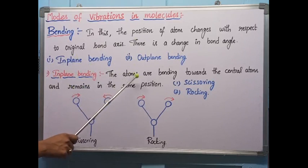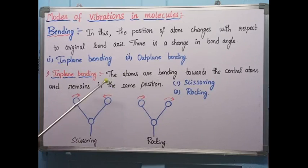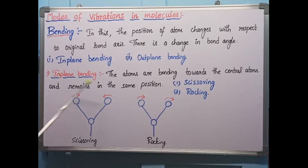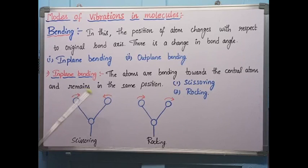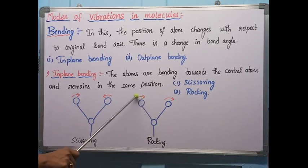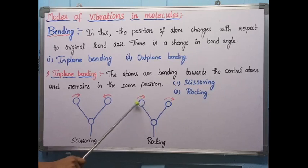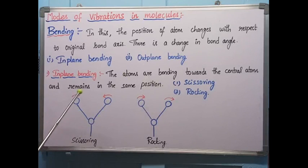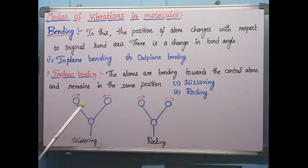In in-plane bending, the atoms undergo bending and remain in the same plane. There are two types: scissoring and rocking. In scissoring, the two atoms bend inside toward each other, like the blades of a scissor, moving in opposite directions. In rocking, the two atoms move in the same direction.